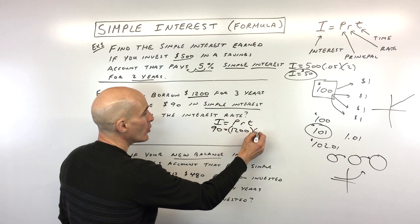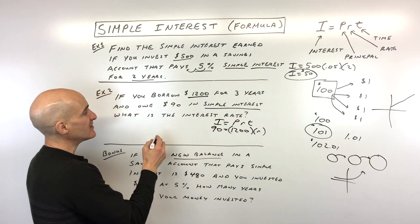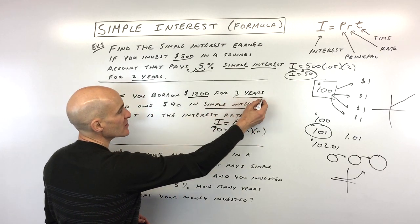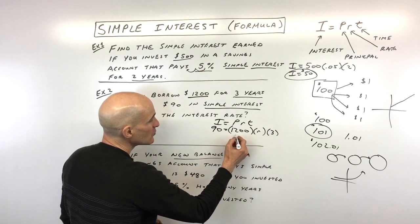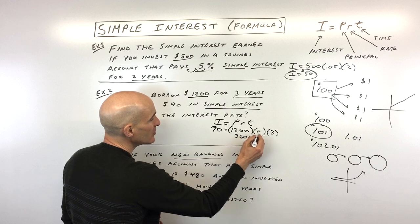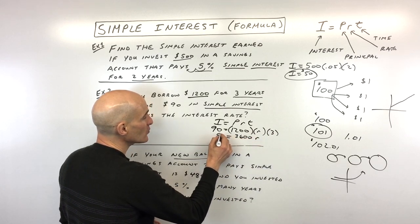The interest rate we don't know, so let's call that R. And then T, the time, is three years. So we put in three in place of T. If we simplify here, $1,200 times three is $3,600 times R equals 90.